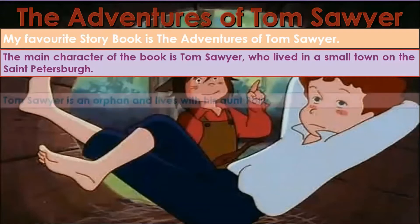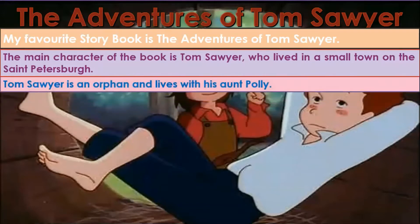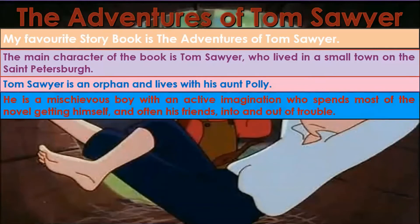Petersburg. Tom Sawyer is an orphan and lives with his Aunt Polly. He is a mysterious boy with an active imagination who spends most of the novel getting himself and often his friends into and out of trouble.